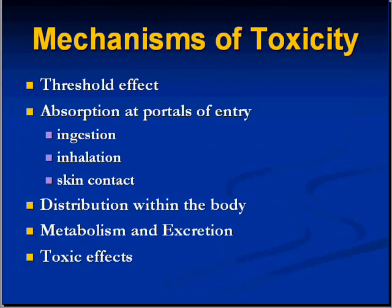When you talk about exposures of toxic substances in the environment entering our body, we have to go into several basic concepts. We'll talk about the threshold effect, and then we'll talk about the ways which toxins enter the body. There are really only three ways they can — if you remember your anatomy and histology: ingested, inhaled, or through skin contact. We'll also talk about distribution of toxic substances in the body, their metabolism, their excretion, and some of their effects.